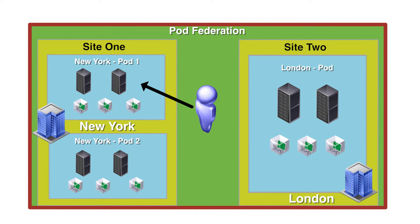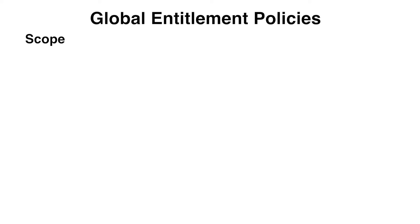A View administrator can modify the default search behavior by setting global entitlement policies. The global entitlement policies that affect search behavior are the scope and home site. Let's look at the scope policy first.